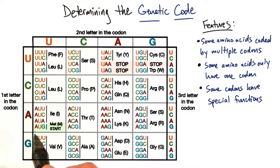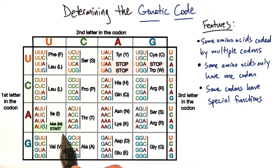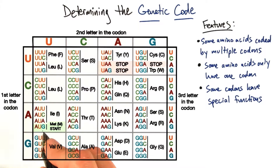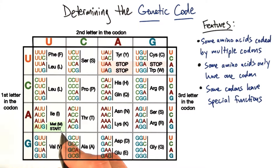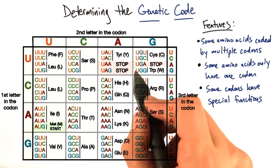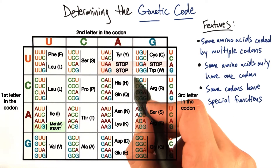Over here we have one codon that codes for the amino acid methionine, but it's also representative of the start — it appears as a start codon. This AUG is really important because it is necessary to start protein synthesis for translation. It tells the ribosome where to start. Alternatively, the stop codons are signals that tell the ribosome where to stop.